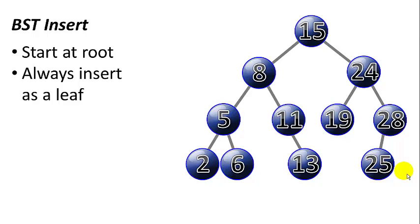For a binary search tree insertion, we start at the root, which is node 15. Let's say we want to insert a 12. We're always going to insert a node as a leaf. Our first comparison, we'll compare 12 to 15. 12 is less than 15, we take the left child. We compare 12 to 8. 12 is greater than 8, so we take the right child. We compare 12 to 11. 12 is greater than 11, so we take the right child. We'll compare 12 to 13. 12 is less than 13. 13 has no children, so we add 12 as a new left child for node 13. We can see that node 12 is inserted as a leaf node.